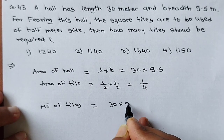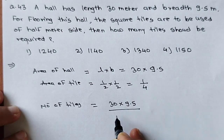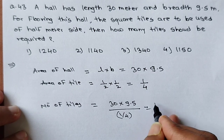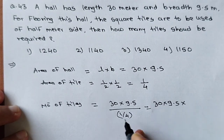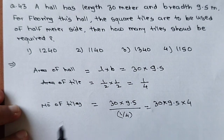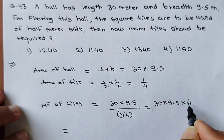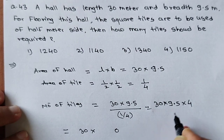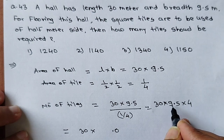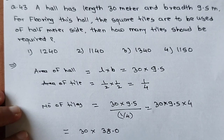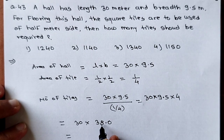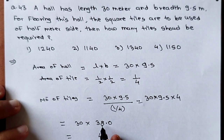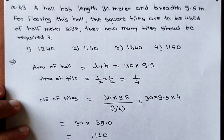Number of tiles equals the total area of hall divided by area of tile. That is 30 into 9.5 divided by 1 upon 4. Simplifying: 30 into 9.5 into 4. Multiply 9.5 with 4 to get 38, so it becomes 30 into 38. Then 30 into 38 equals 1140. So 1140 is option number 2. The number of tiles required to floor the hall is 1140 — option 2 is our correct answer.